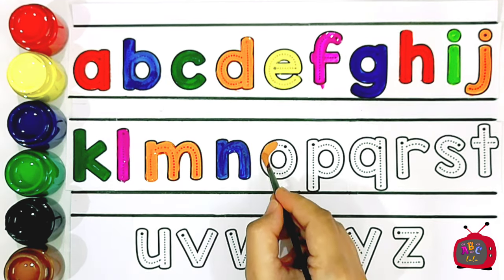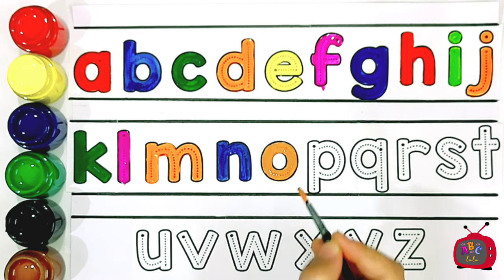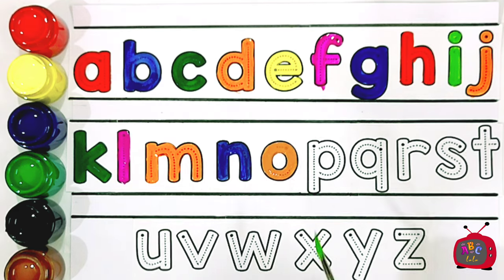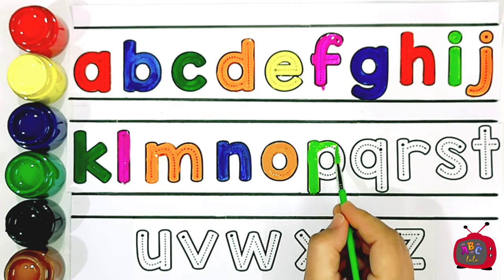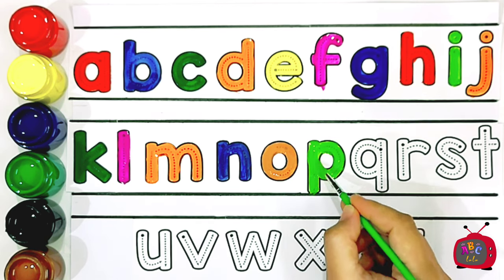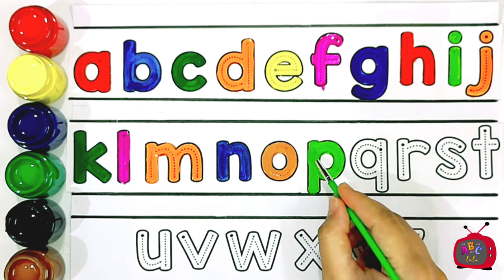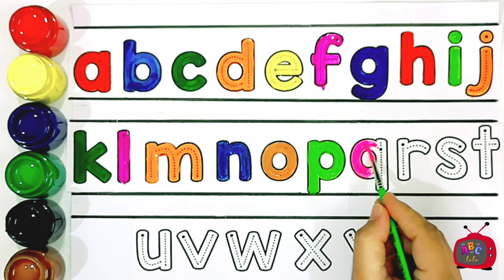O. O is for Octopus. P. P is for Penguin. Q. Q is for Queen.